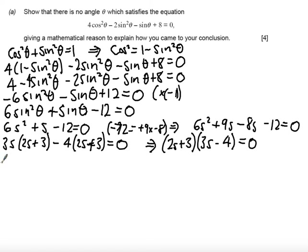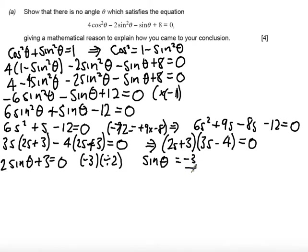So what we end up with is 2s + 3 = 0. If I add 3 and divide by 2 in one step, I get sinθ = -3/2. Sorry it shouldn't be plus 3, it should be minus 3.